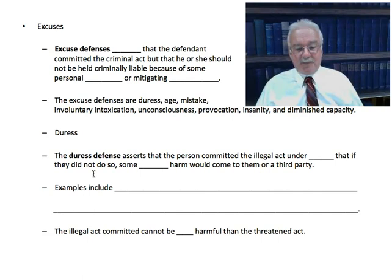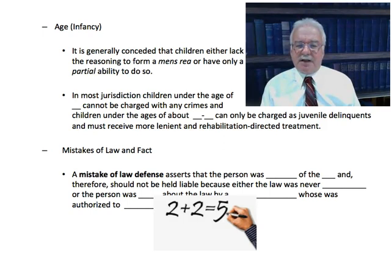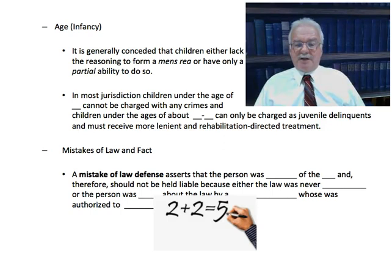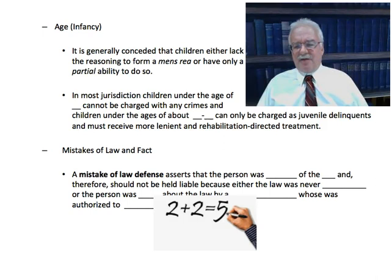Let's look at age. It is generally conceded that children either lack the reasoning to form a mens rea — the guilty mind — or have only a partial ability to do so. In most jurisdictions, children under the age of six cannot be charged with any crime no matter what they do. Children ages six to 18 can only be charged as juvenile delinquents, which isn't technically a criminal conviction, and they generally receive sentences that are more reform-minded, although incarceration is possible for serious crimes.